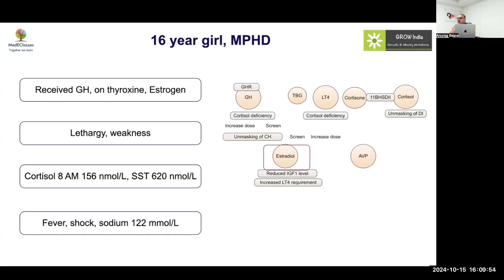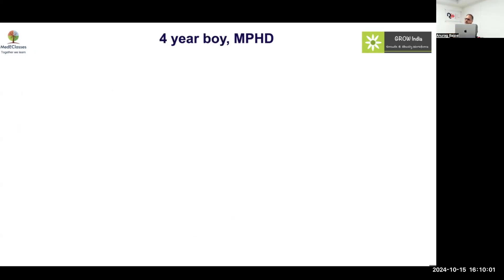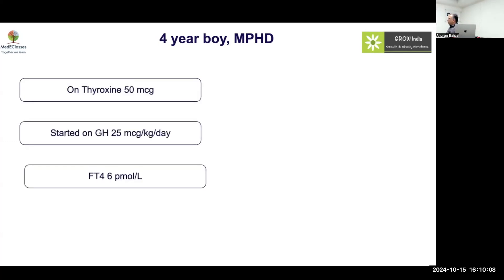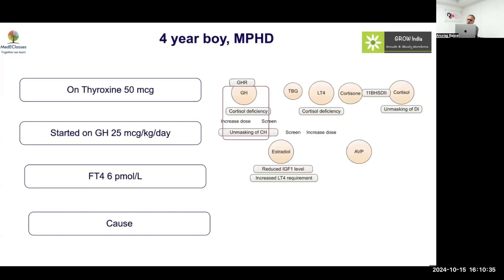Case: 4-year-old boy with MPHD on thyroxine 50 mcg, started on growth hormone 25 mcg/day. FT4 goes down. Parents say growth hormone caused the problem — and they are correct. Growth hormone increases the requirement for thyroid hormone. You should anticipate this and increase the thyroxine dose proactively. Growth hormone may unmask hypothyroidism and worsen it, or increase thyroid hormone requirements in patients with central hypothyroidism.